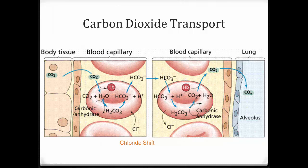When we get to the lungs, the bicarbonate diffuses back into the red blood cell and combines with the hydrogen ion to form carbonic acid. Since we're moving negatives in, chloride negatives move out — again shifting charges to keep everything balanced. Bicarbonate combines with hydrogen ions inside the red blood cell forming carbonic acid, which then dissociates via carbonic anhydrase into carbon dioxide and water. The CO2 diffuses out along with CO2 detaching from hemoglobin, diffuses into the plasma, then into the lungs, and we exhale it.